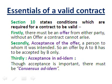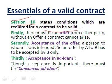Now, what are the essential elements of a valid contract? Section 10 of the Indian Contract Act states the conditions which are required for a contract to be valid. When these conditions are fulfilled, the agreement becomes a valid contract.